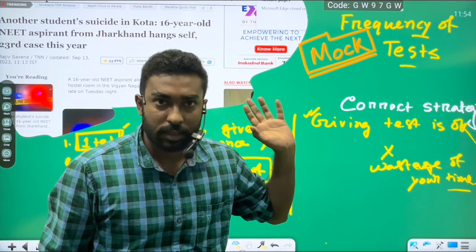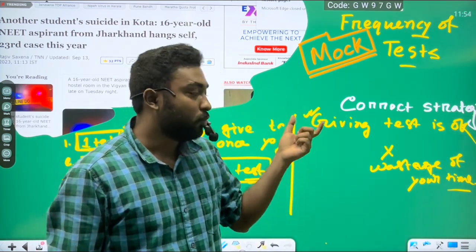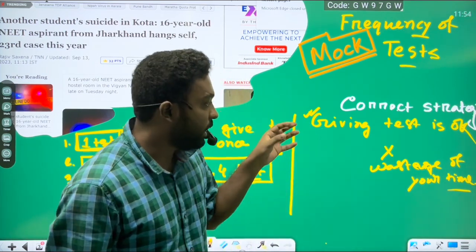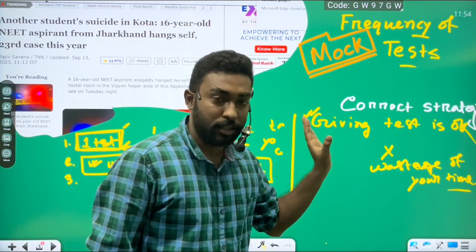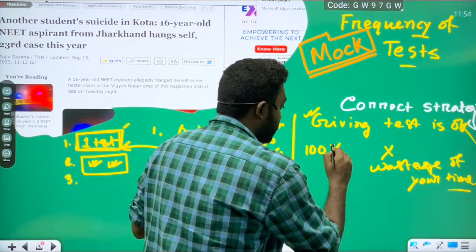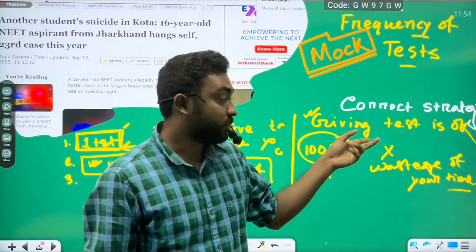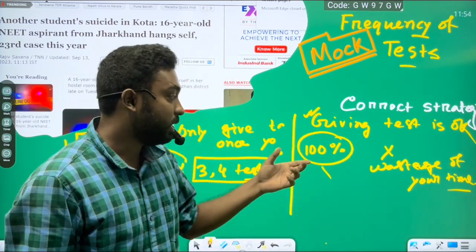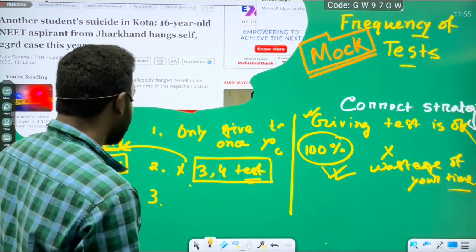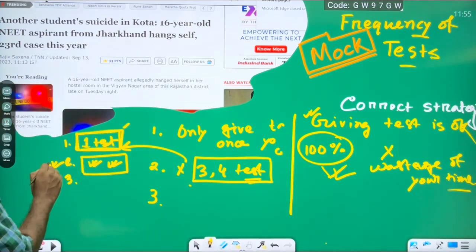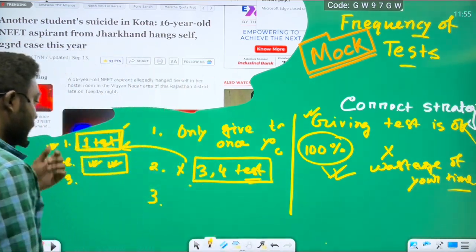Say you have given four tests and you have not analyzed any single test. Say your friend attempted one test only and he has analyzed all the questions and got them checked from a teacher. So, his test is 100 times efficient than yours. You are getting zero after giving four tests. But your friend will get benefited by 100% more than you. So, you should keep in mind, analysis of test is the real thing. Not sitting in a test is important.